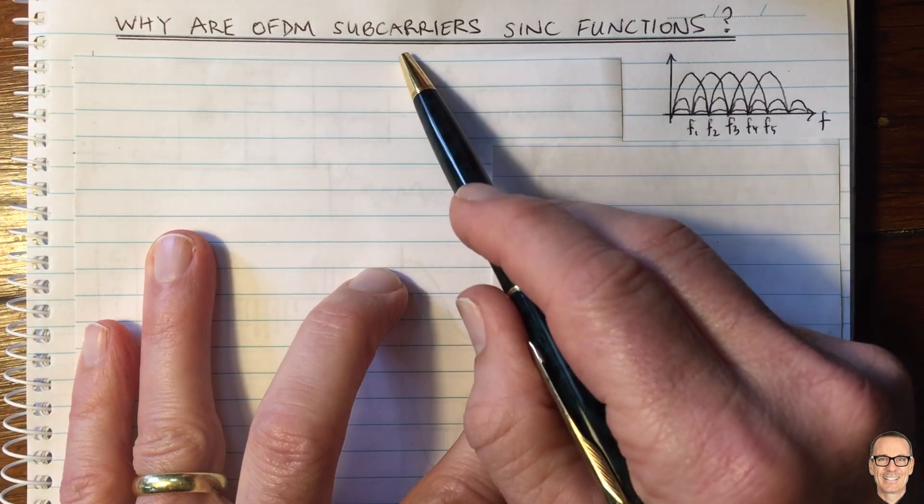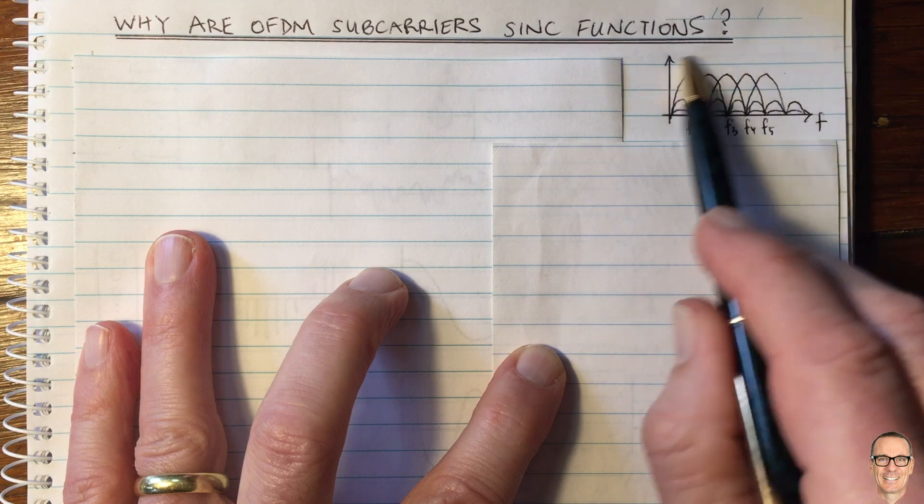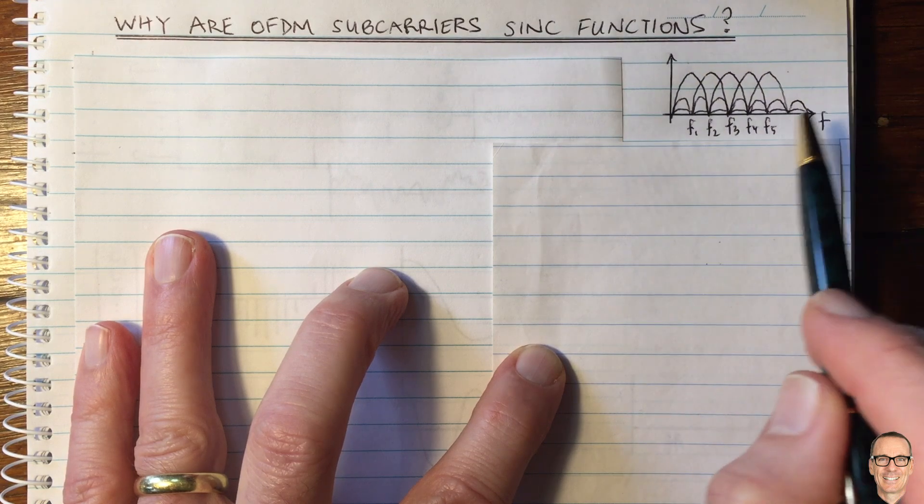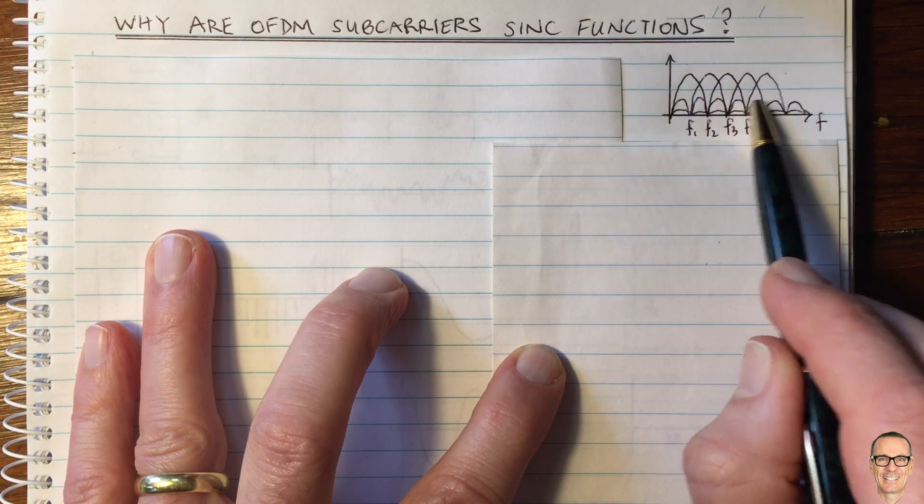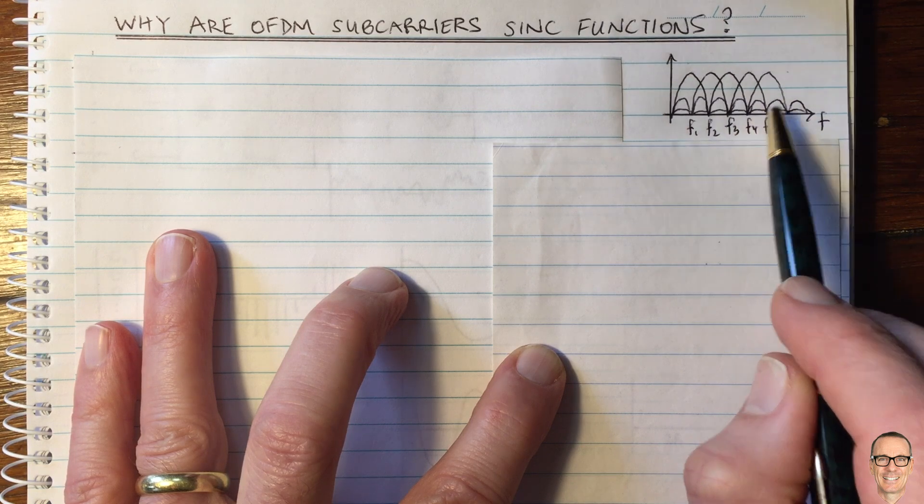Why are OFDM subcarriers sinc functions? You've probably seen this picture here in the frequency domain showing the subcarriers, and they are shown as sinc functions. Why are they sinc functions?